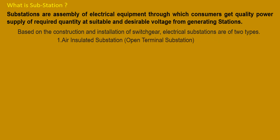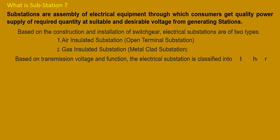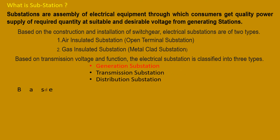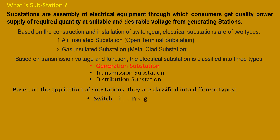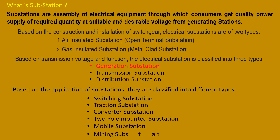Based on transition voltage and functions, electrical substations are classified into three types: generation substation, transmission substation, and distribution substation. Based on the application of the substation, they are classified into different types: switching substation, traction substation, converter substation, pole-mounted substation, mobile substation, and mining substation.